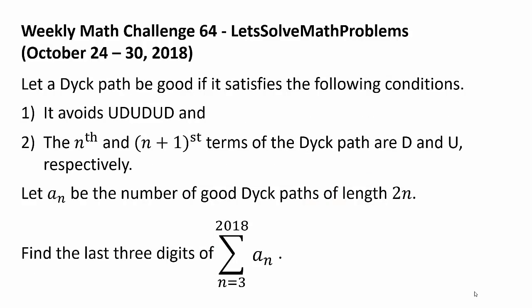And now finally the question. Let a Dyck path be good if it satisfies the following conditions. First, it avoids UDUDUD, and second, the nth and (n+1)st terms of the Dyck path are D and U respectively. Let a_n be the number of good Dyck paths of length 2n. Find the last three digits of the summation from n equals 3 to 2018 of a_n.